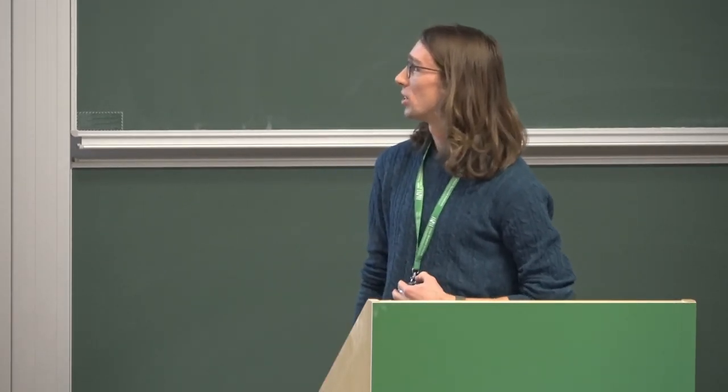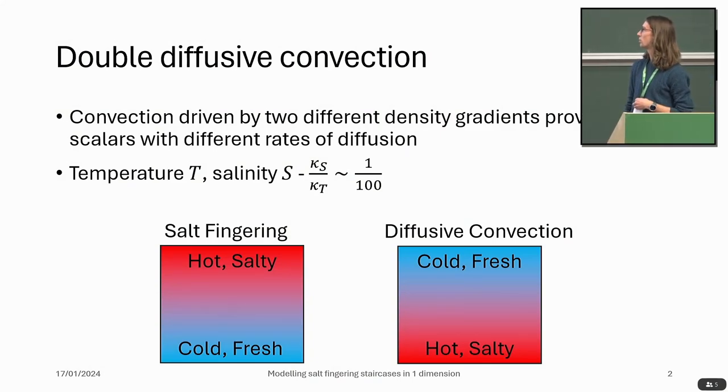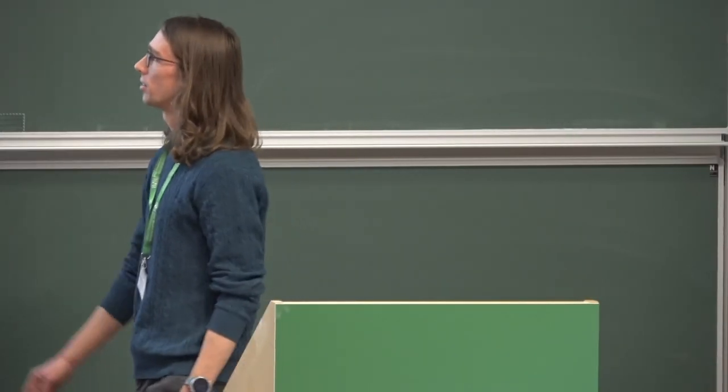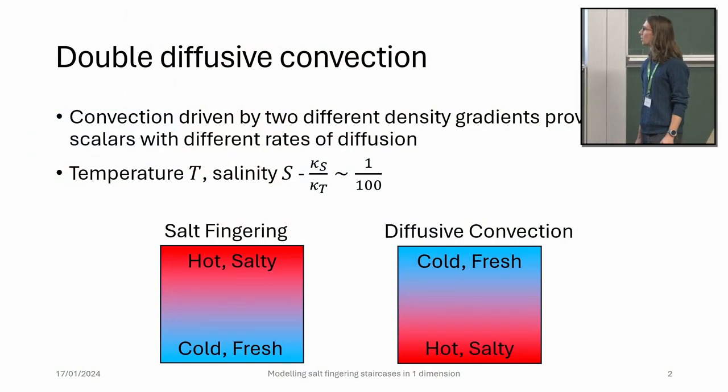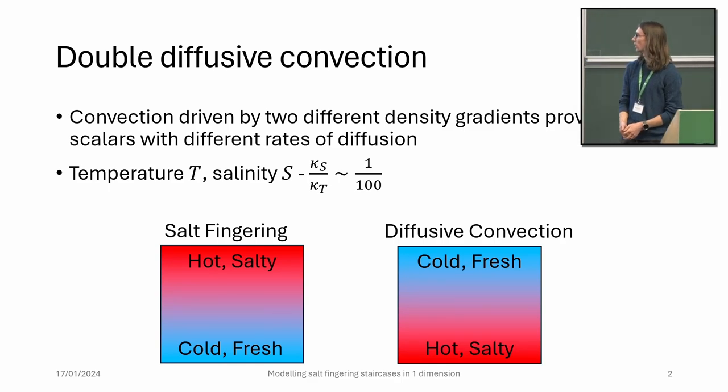A second introduction today to double diffusive convection, which is defined as convection driven by two different density gradients provided by scalars with different rates of diffusion. The most common example is in the oceans where we've got separate temperature and salinity fields which have diffusivities differing by a factor of about a hundred. There's two separate configurations: salt fingering where we've got hot and salty water over the top of colder and fresher water, and diffusive convection which is where cold and fresh water overlies hot salty water. I'm going to focus mostly on salt fingering but a lot of the background is relevant to both.